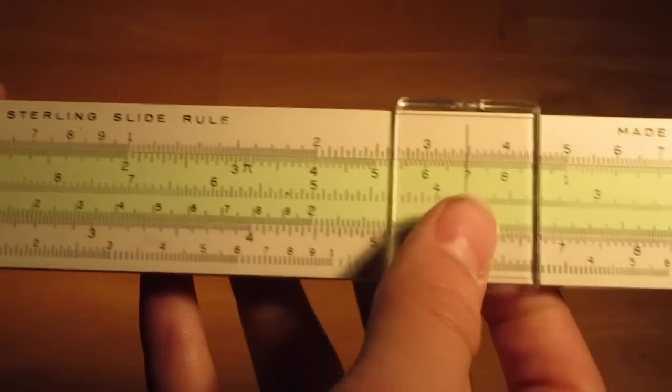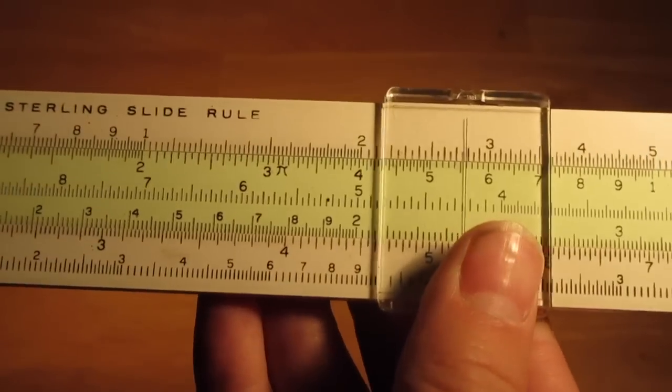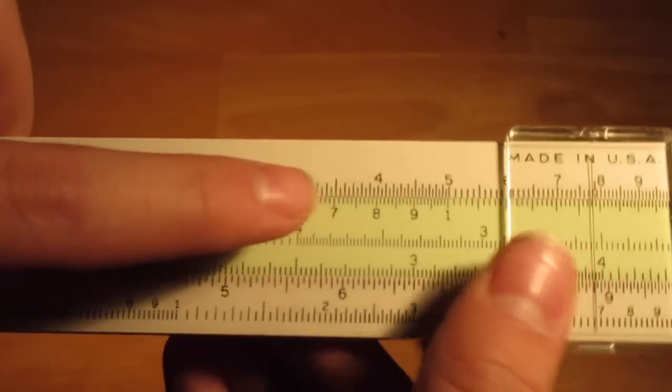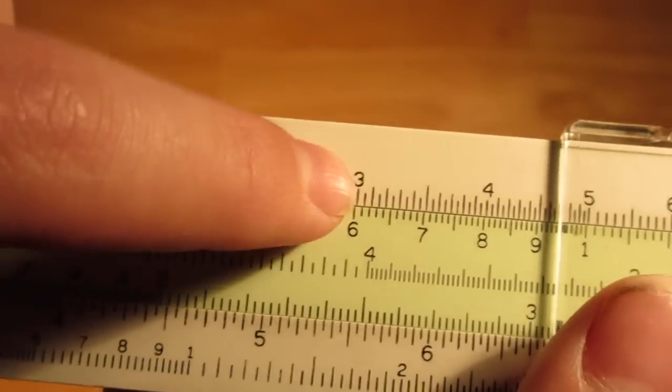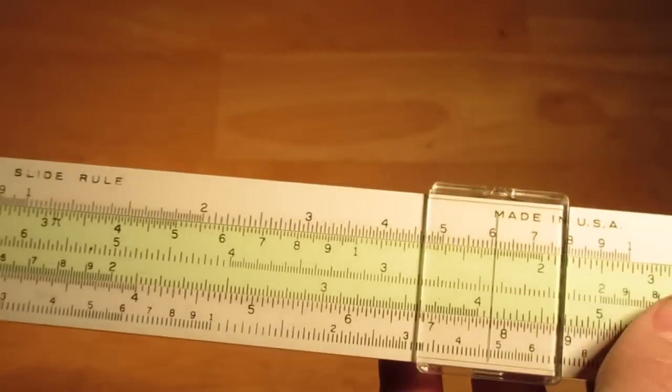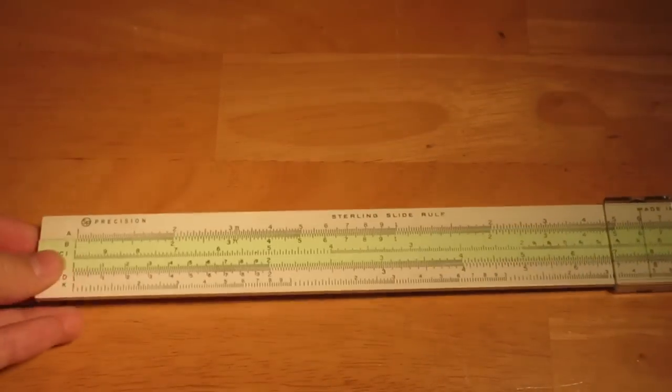So we're multiplying five times seven. There's the five. Now, we go over here on the B scale. We find seven, and that halfway between 30 and 40 is 35. As we know, five times seven is 35.